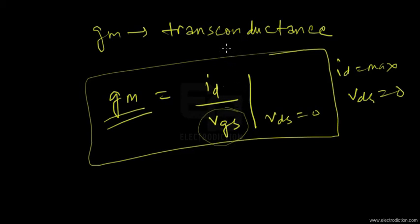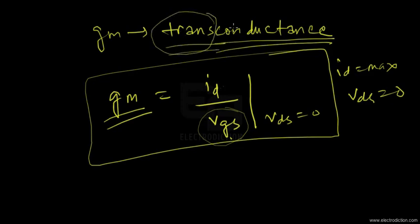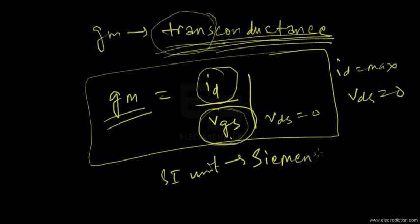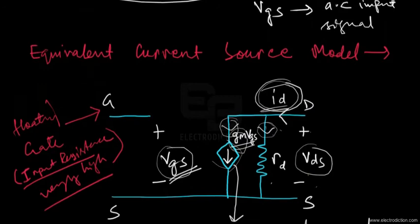Transconductance has the dimensional formula of conductance — current divided by voltage. The prefix 'trans' refers to the transfer of conductance, reflecting the fact that the FET, being a voltage-controlled device, exercises control over the output current with the help of the input voltage. This property is embodied in its name. Its SI unit is Siemens (S).